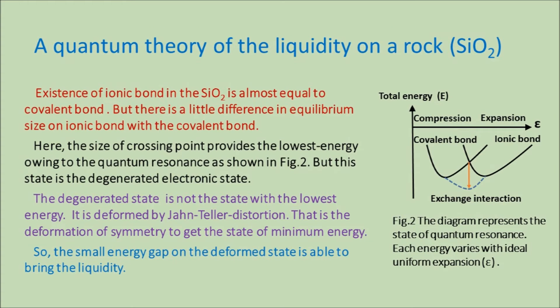A quantum theory of the liquidity of rock SiO2 is proposed as follows: the existence of ionic bond in SiO2 is almost equal to covalent bond, but there is a little difference in equilibrium size between ionic bond and covalent bond. The crossing size becomes the lowest energy by a quantum resonance, as shown in Figure 2. However, this state is a degenerated electronic state, and the degenerated state is not the state with the lowest energy. It is deformed by Jahn-Teller distortion — that is, a deformation of symmetry — to get the state of minimum energy, so the small energy gap on the deformed state is able to bring the liquidity.